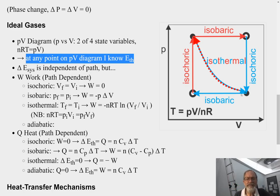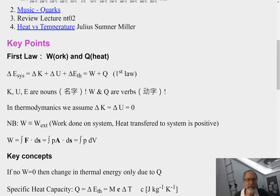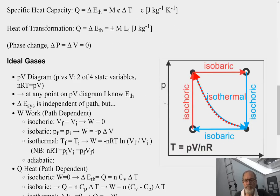But, I say the delta E_th is independent of path, but that doesn't mean W and Q are. So, W, the amount of work done and the amount of heat used, depends on the path. So, the total change in energy doesn't, but the amount of work and the amount of heat do.